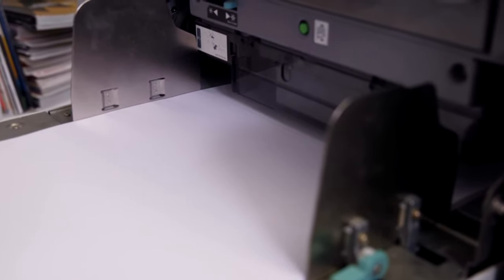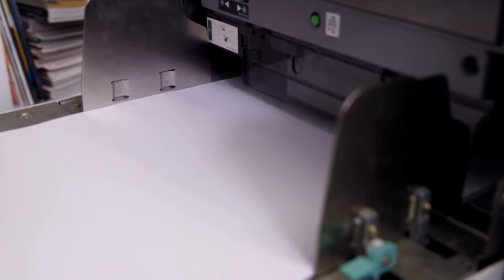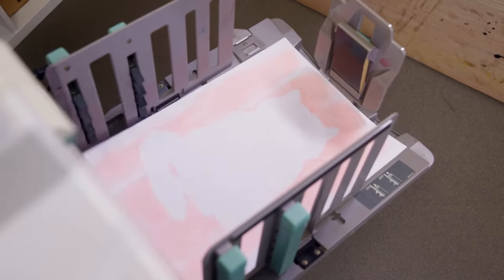The paper is fed from the left. The drum rotates and transfers ink onto the paper as it passes through, and it comes out on the right.